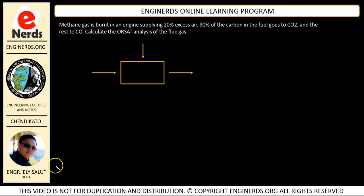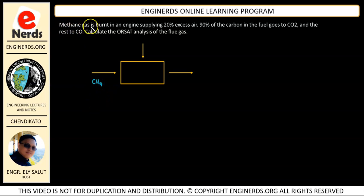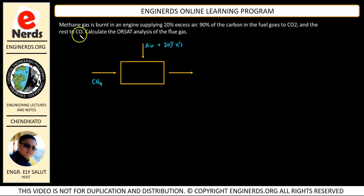We're going to solve another problem with incomplete combustion. This time our fuel is not pure carbon but methane gas, CH4. Our methane gas is burned in an engine supplying 20% excess air. 90% of the carbon in the fuel goes to CO2 and the rest to CO. We need to calculate the Orsat analysis of the flue gas.